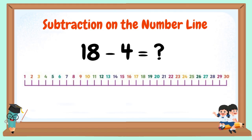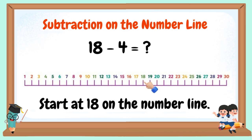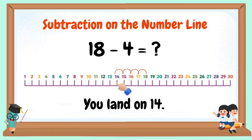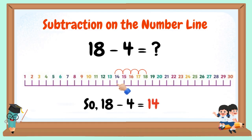18 minus 4 equals — start at 18 on the number line, move 4 steps backward. You land on 14. So 18 minus 4 equals 14.